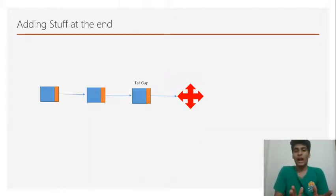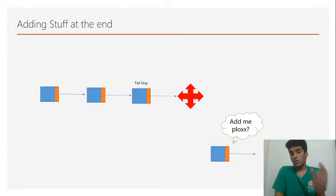Adding stuff at the end, why are we talking about it? Well, it is the easiest to do. Adding stuff at the end is very easy to do. And the reason is, let's just say there was this guy who came in and wanted to join this linked list. Now this unsuspecting linked list actually wanted to make this guy join.